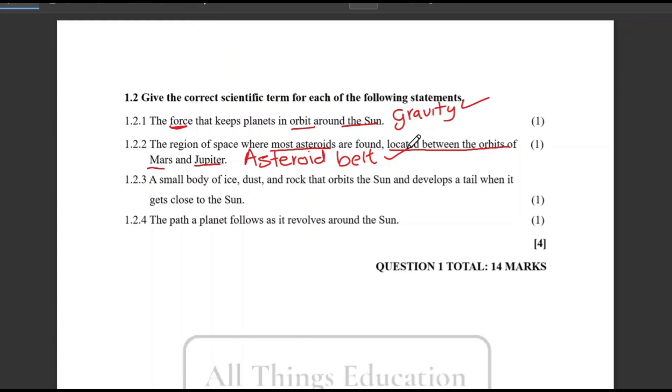Question 1.2.3, a small body of ice, dust, and rock. This small body normally orbits the sun and develops a tail when it gets close to the sun. What do we call it? That's a comet. Easy peasy, right? Question 1.2.4, the path a planet follows as it revolves around the sun. What do we call that path? That's an orbit. So a planet orbits around the sun. For terminology, I hope you got all of them correct. Let me know how you got out of four marks.